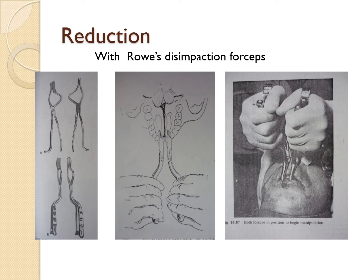For reducing the fracture in cases of disimpaction: the Rowe's disimpaction forceps is used — it is a paired instrument. One side goes inside the oral cavity to support the palatal region and the flattened surface goes into the nasal cavity, and we can reduce the fracture. For stabilization, the Rowe's disimpaction forceps can be used along with the Hayton-Williams forceps for maxillary mobilization.